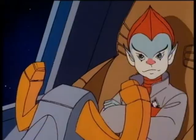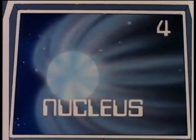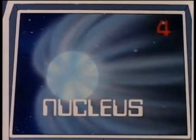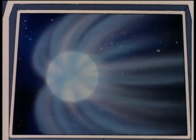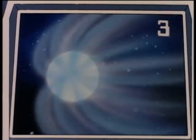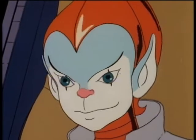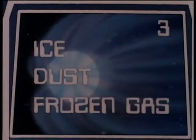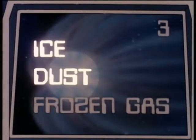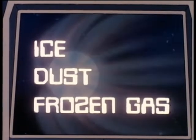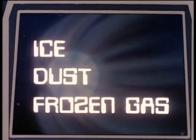Now for four points, what do we call the core of a comet? The nucleus. Correct, four points. Now for three points, what is the nucleus of a comet made of? Ice dust or frozen gas. Ice dust, frozen gas — they're all correct! You're at three for three, nine points.